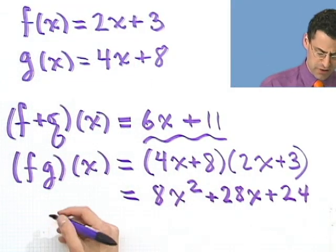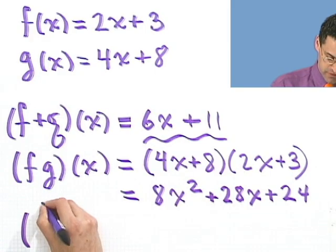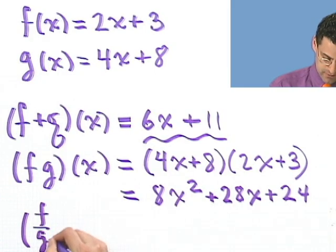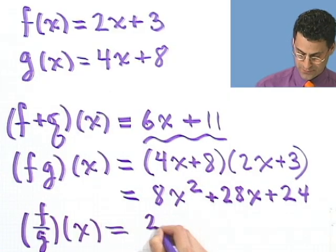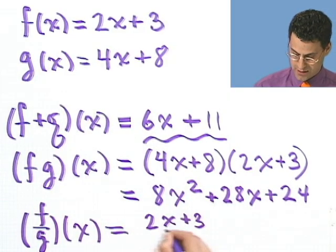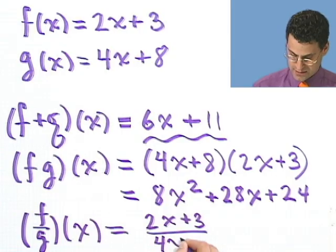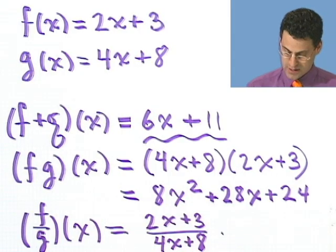Again, not a big deal. You can imagine dividing them. You'll never believe the symbol for that. It's f divided by g of x. And that would just be the quotient: 2x plus 3 divided by 4x plus 8.